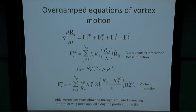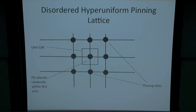To look at this, we use a standard model for superconducting vortices — just overdamped particles. We consider bulk interactions, so stiff vortex lines in a bulk sample interacting with the Bessel function. Then we consider pinning sites that are just parabolic traps. We initialize the vortex positions with a simulated annealing procedure, and then apply a uniform driving force along the positive x direction. We consider two types of pinning: the first is Poisson random pinning, which we form by just randomly placing pinning sites without letting them overlap. The other type is disordered hyperuniform — we cut space up into unit cells of squares, and for each square place the pinning site randomly within that square.